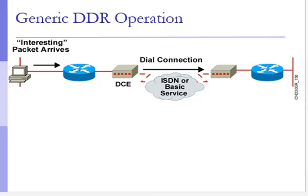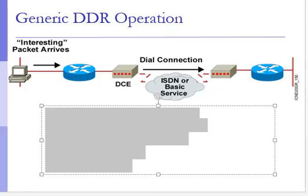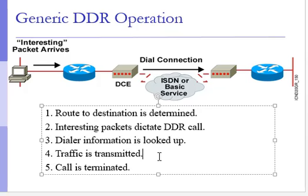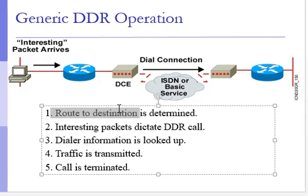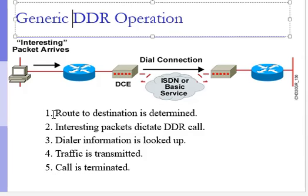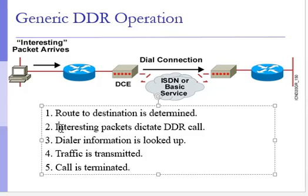Most static routes are configured between routers to avoid periodic transmissions over the WAN, which is costly. But DDR is a form of dynamic routing, which is more efficient in terms of resource reuse. The first step in DDR operation is finding the route — DDR finds a path toward your destination.